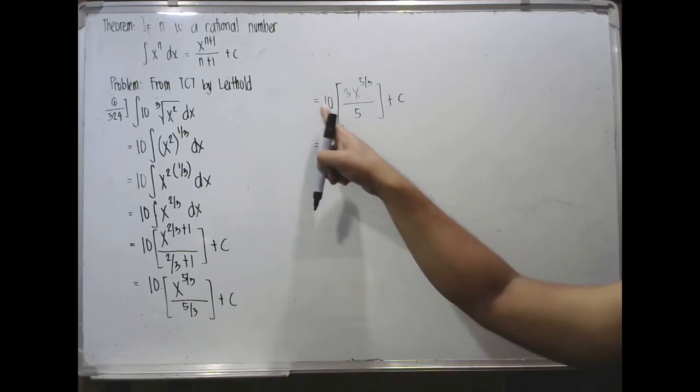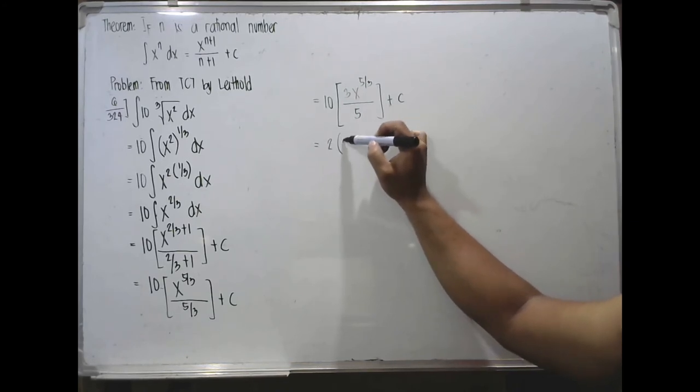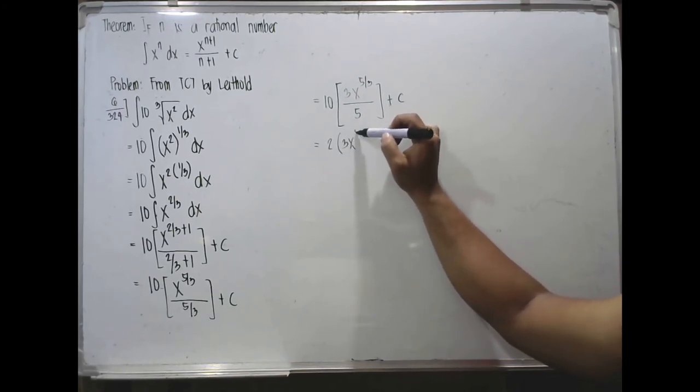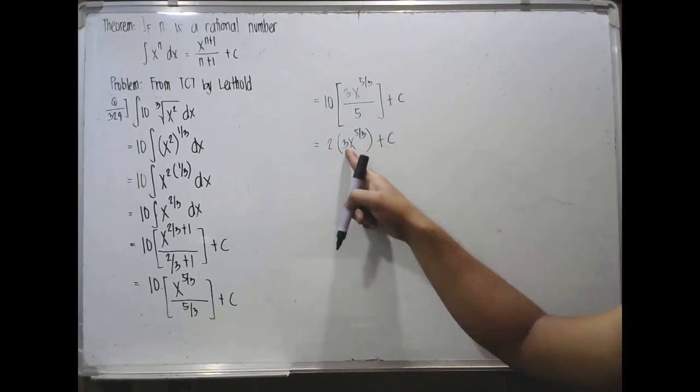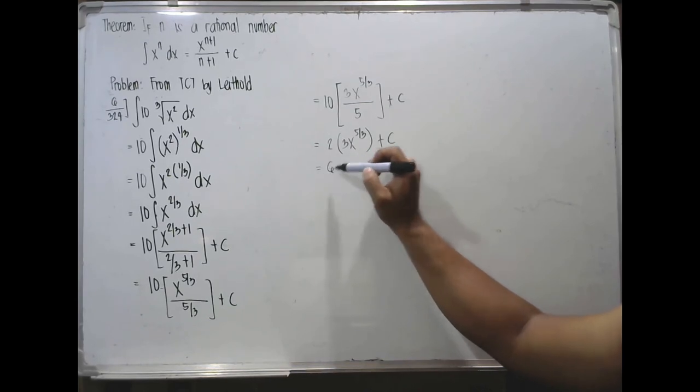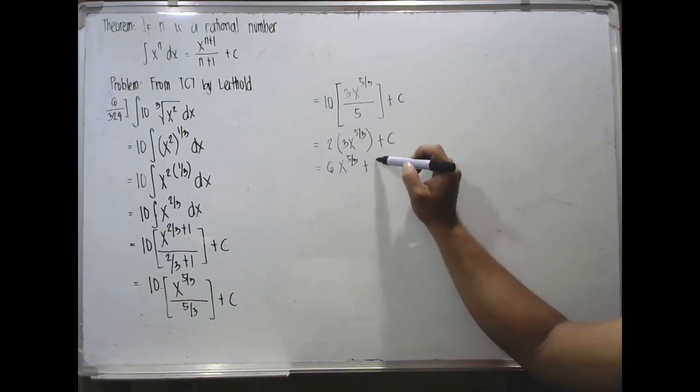So you have 10 divided by 5, so that would be 2 times 3x raised to 5 thirds plus c. So 2 times 3, so you have 6x raised to 5 thirds plus c.